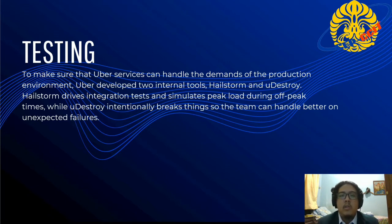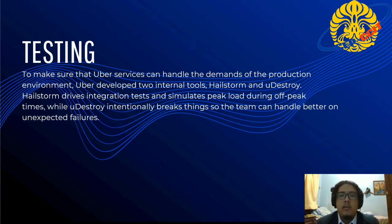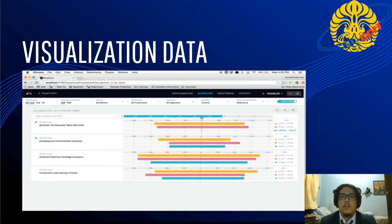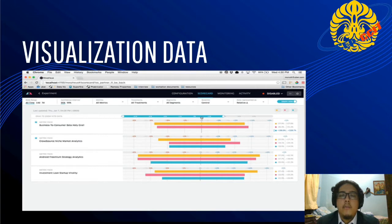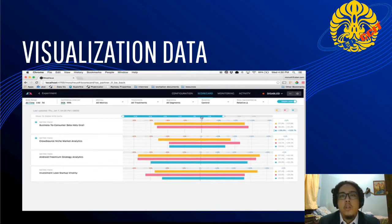For testing, Uber has two internal development tools. The first is Hailstorm, which drives integrity tests and simulates peak loads within off-peak times. The second is uDestroy, which is designed to break things so that engineers can better handle unexpected failures and fix them. For visualization, Uber converts data into visual representations using Storm and Spark, and uses JavaScript and React as core tools, along with standard web graphics tools such as Canvas 2D, SVG, and WebGL.